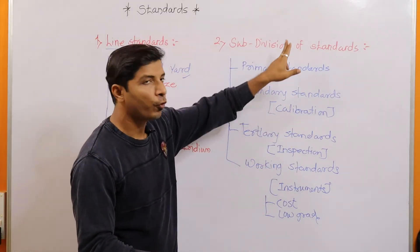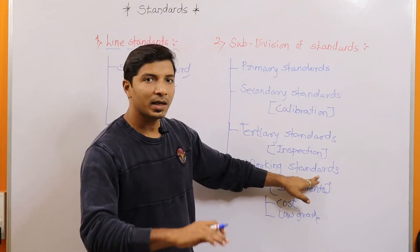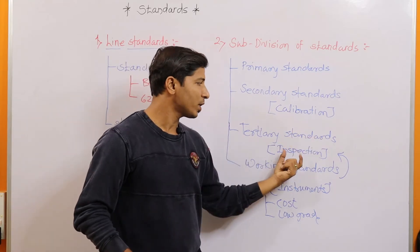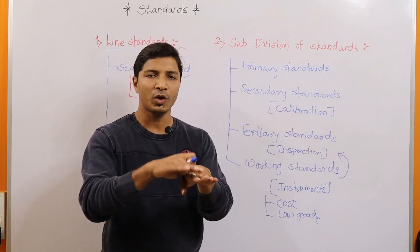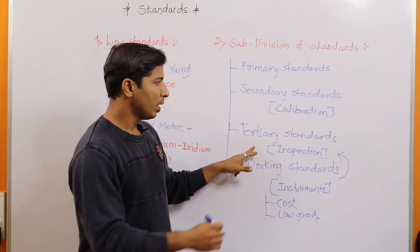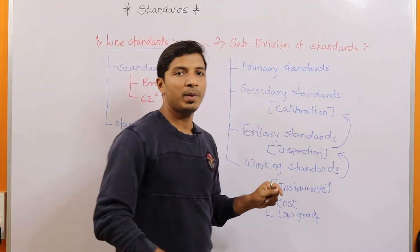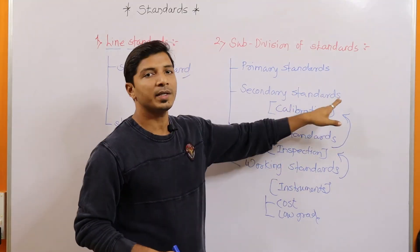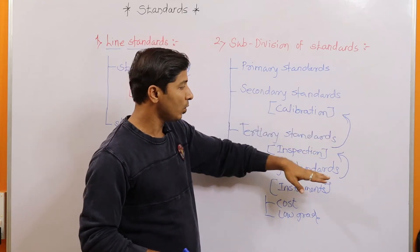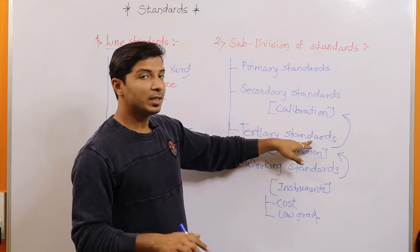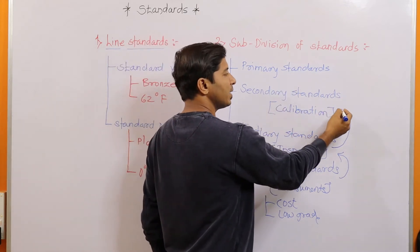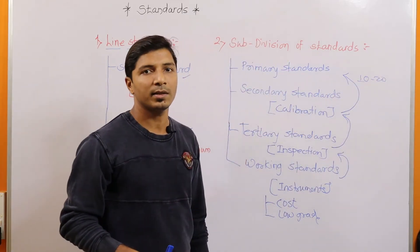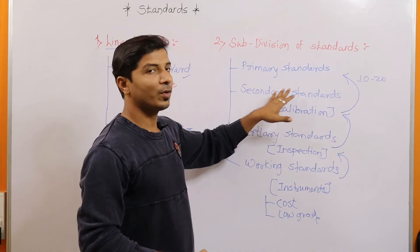Now you can identify the flow. When working standards are frequently used, they need to be inspected with the help of tertiary or inspection standards at frequent intervals — maybe after a week or two weeks. But at specific intervals, maybe after one or two years, the tertiary standards need to be compared with secondary standards to see whether the accuracy level is maintained. Then secondary standards are again compared after 10 to 20 years with primary standards to ensure the accuracy of the secondary standards.